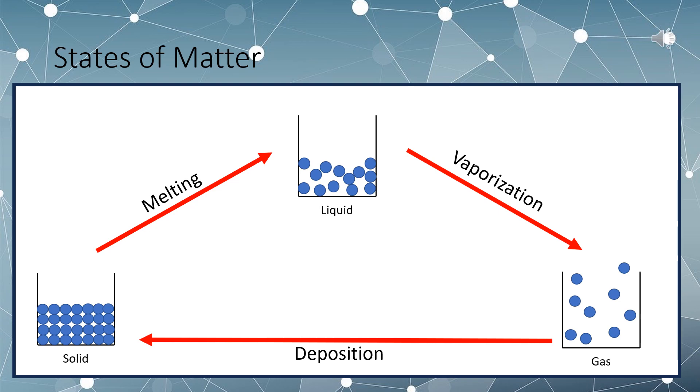We can, of course, go the other way in the triangle as well. So, starting with our liquid, let's start in the middle. To go from a liquid to a solid, we have to decrease the energy of the particles, or reduce the temperature.